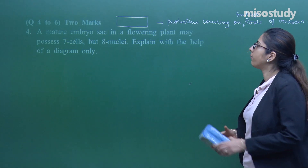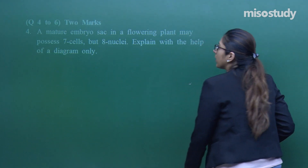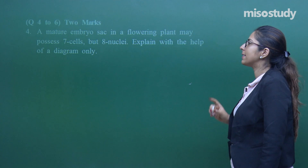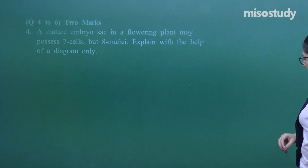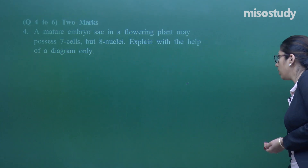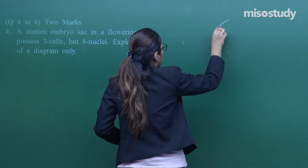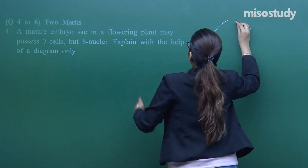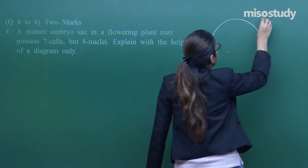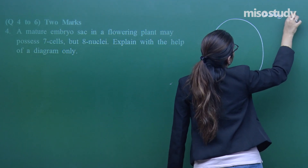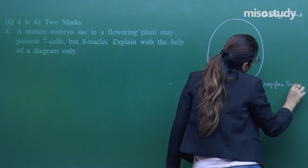Now the two-mark questions. Question number 4: 'A mature embryo sac in a flowering plant may possess 7 cells but 8 nuclei — explain with the help of a diagram.' In the embryo sac, there are two ends: the chalazal end and the micropylar end. At the micropylar end, synergids are present.